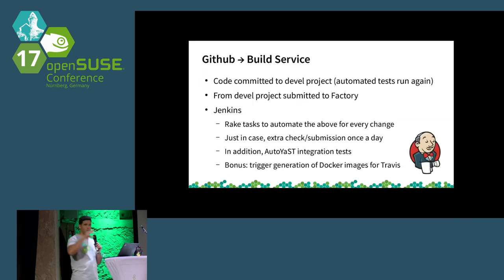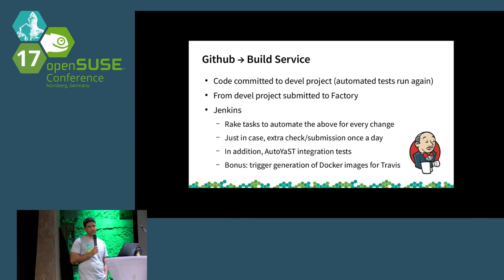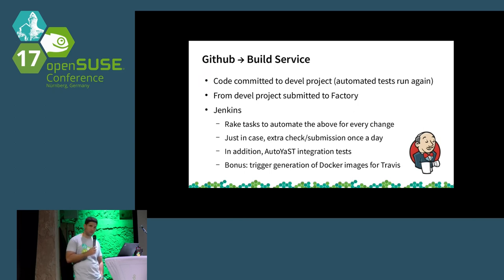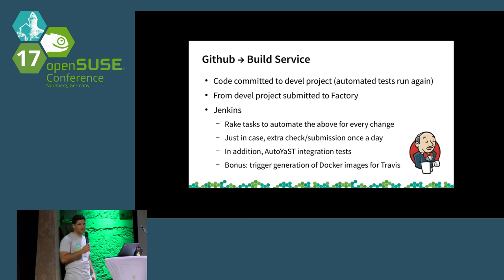The next step is going from GitHub to the build service. For that we use a different continuous integration system called Jenkins. Unlike Travis, which is a service, Jenkins is a self-hosted solution — we have Jenkins servers installed and controlled by us. We actually have two of them because we have two build services: the OpenSUSE build service that you all know, and also SUSE has an internal one for creating enterprise products — exactly the same software but on a different server. Both are always watching our GitHub repo, and that's very important — it is the same GitHub repo, so the source code is exactly the same. YaST is exactly the same code base in all SUSE products and all OpenSUSE products.